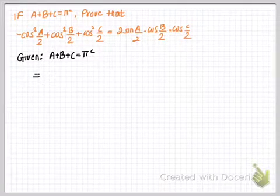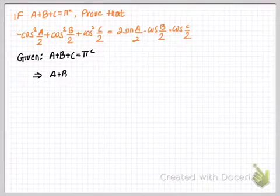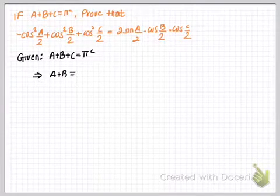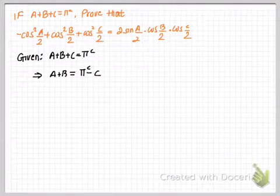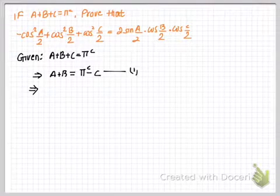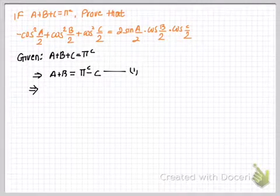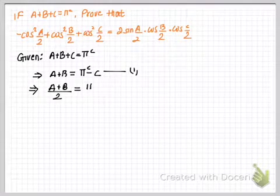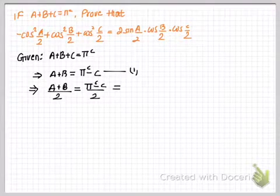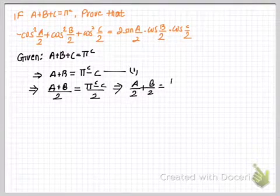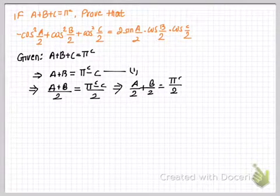We can make a simple rearrangement by subtracting C on both sides of this equation. This results in A plus B equals pi minus C. Now I'm going to divide both sides by 2, so the simplified form will be A/2 plus B/2 equals pi/2 minus C/2.